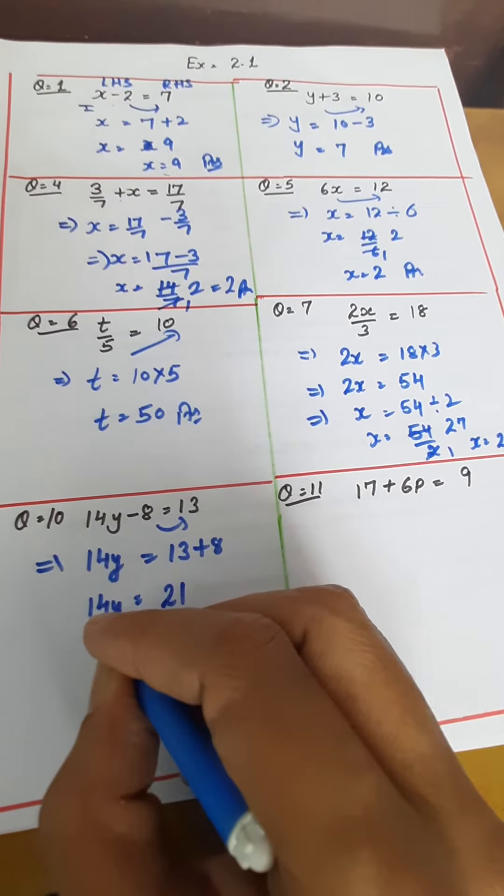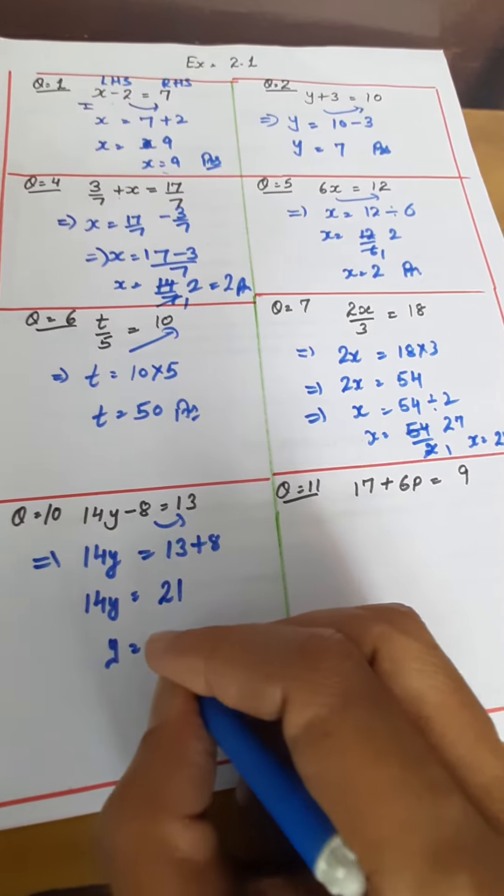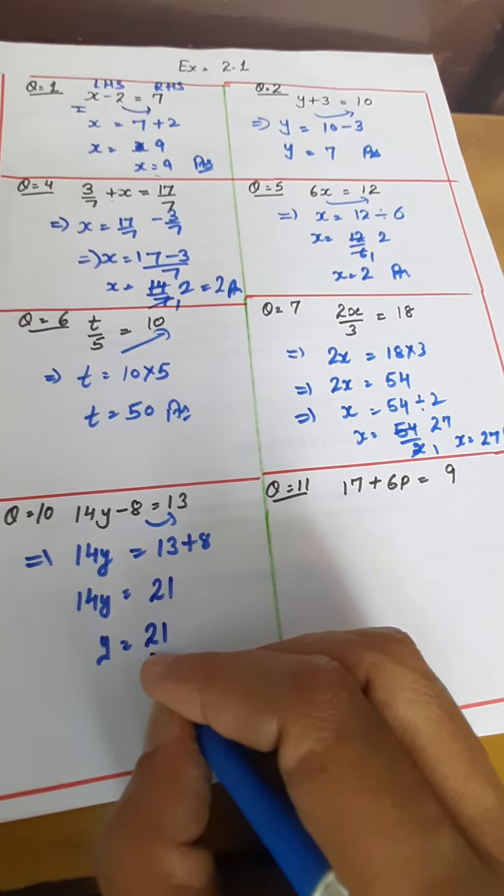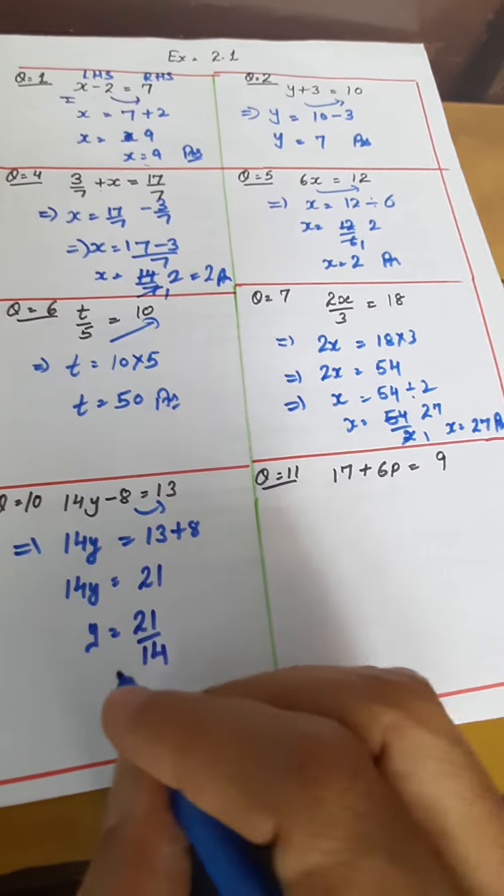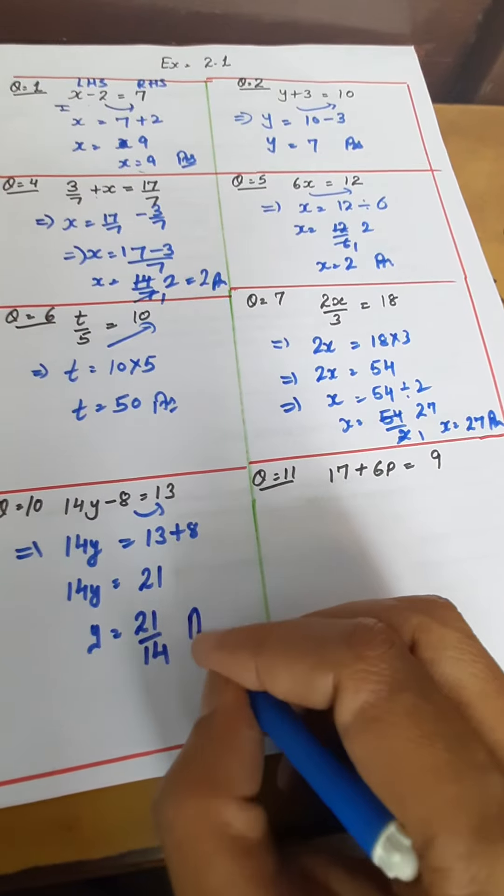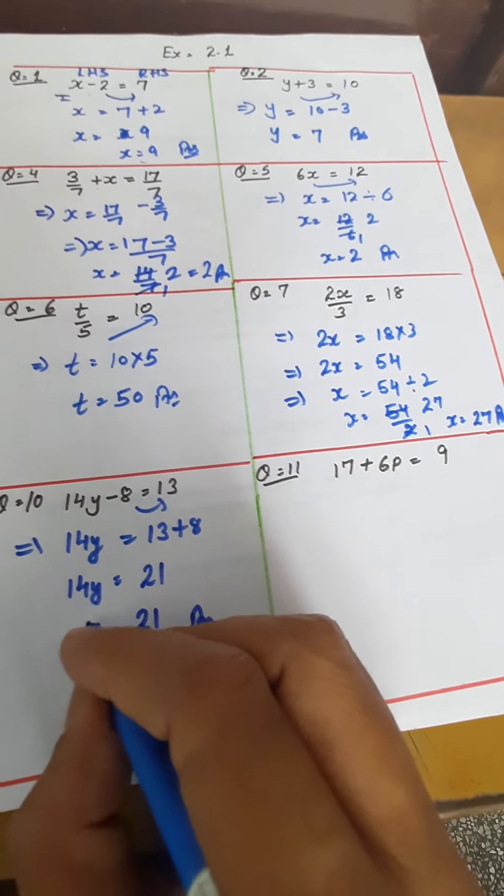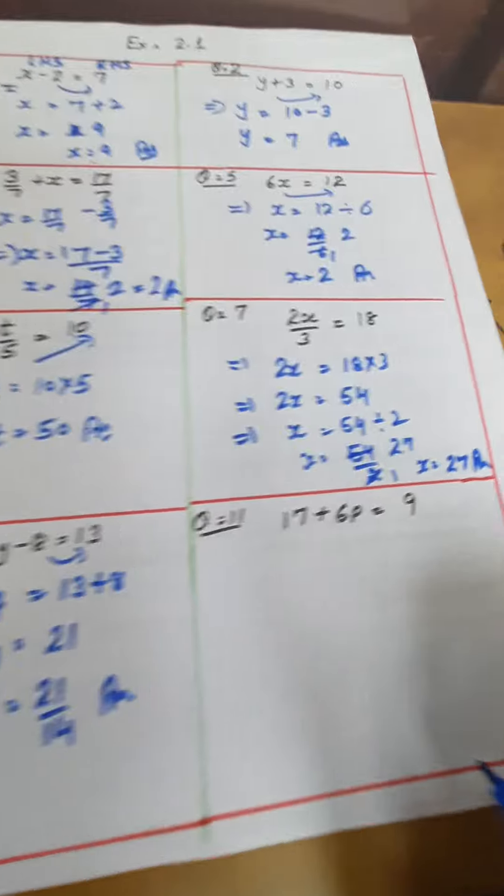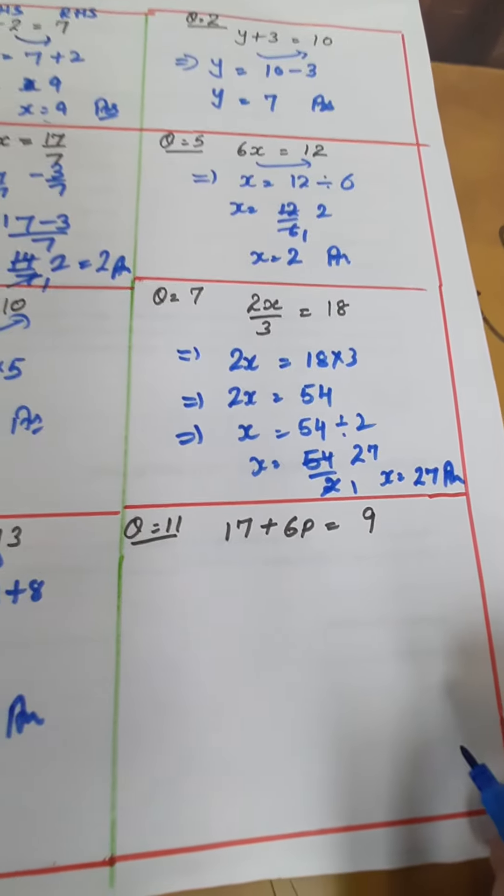So y comes out to be - here 14 is multiplication. It will be divided when transposed to the other side. So that will be our answer: y equals 21 upon 14. Now question number 11.